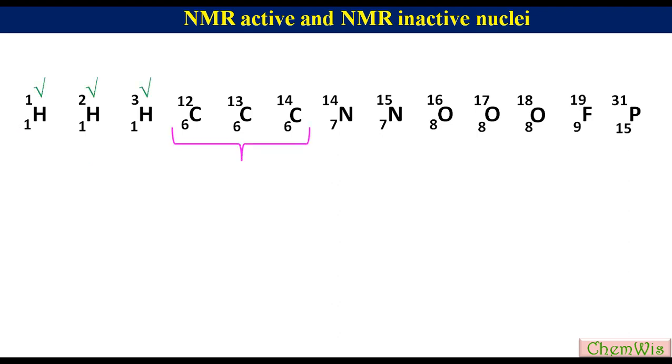Carbon isotopes. Here atomic number is even, so we have to look at mass numbers that will decide whether the isotope is NMR active or inactive. Carbon-12 with even Z and even A will be NMR inactive. Carbon-13 with odd A will be NMR active, while carbon-14 with even Z and even A will be NMR inactive.